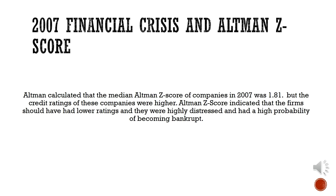To understand the usefulness of this model, consider this example: before the financial crisis, Altman calculated that the median Altman Z-Score of companies in 2007 was 1.81. But the credit ratings of these companies were quite higher. The Altman Z-Score indicated that the firms should have had lower ratings and were highly distressed, with a high probability of becoming bankrupt.